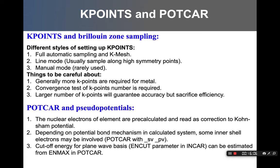The third input file is the KPOINTS file, which tells the code how to sample the reciprocal space, since DFT equations are frequently solved in reciprocal space. The KPOINTS file tells the code how to sample using the Monkhorst-Pack grid. There are different versions of sampling: fully automatic, line mode, or manual mode. In different systems you need different sampling — for instance, metals typically need more k-points. A larger number of k-points always guarantees better accuracy, but it also sacrifices efficiency, so convergence testing is important.